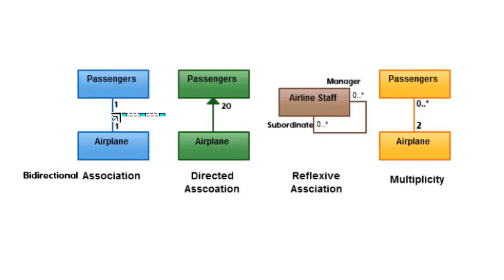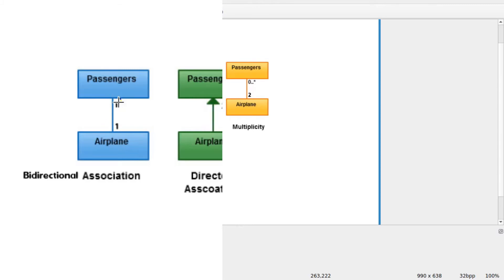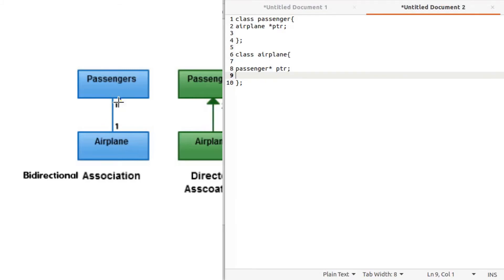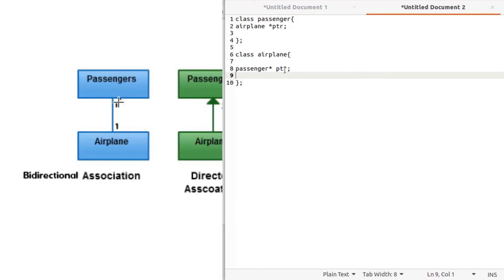So this means an airplane would carry only one pointer of the Passenger type. But if the cardinality were something like 20, it would be implemented like this: class Airplane with passenger_ptr as an array of 20 indices.